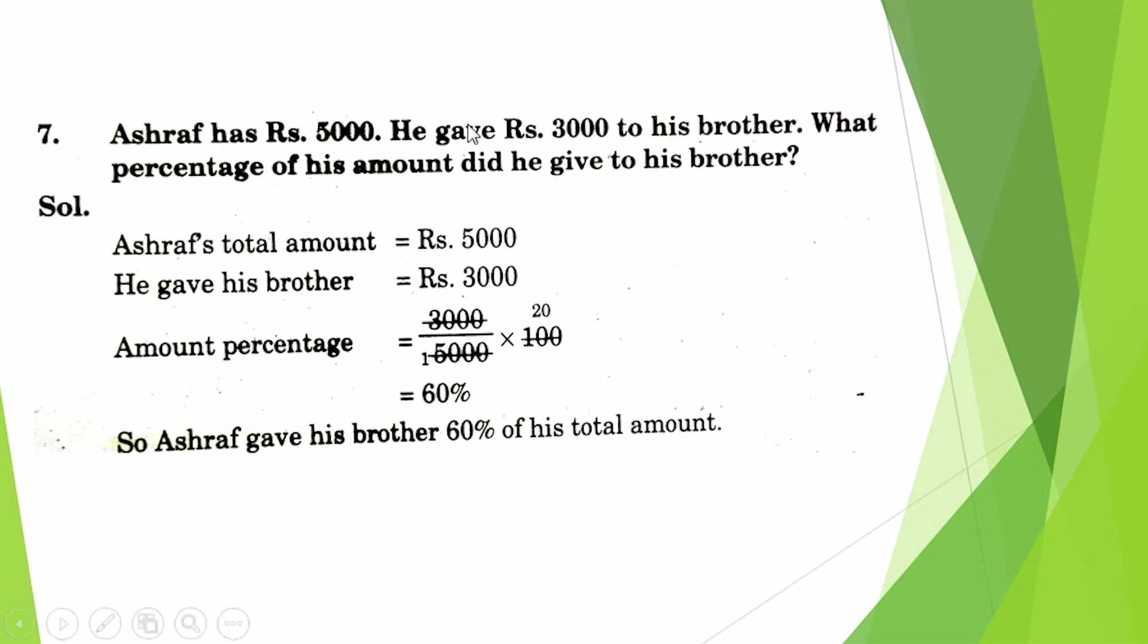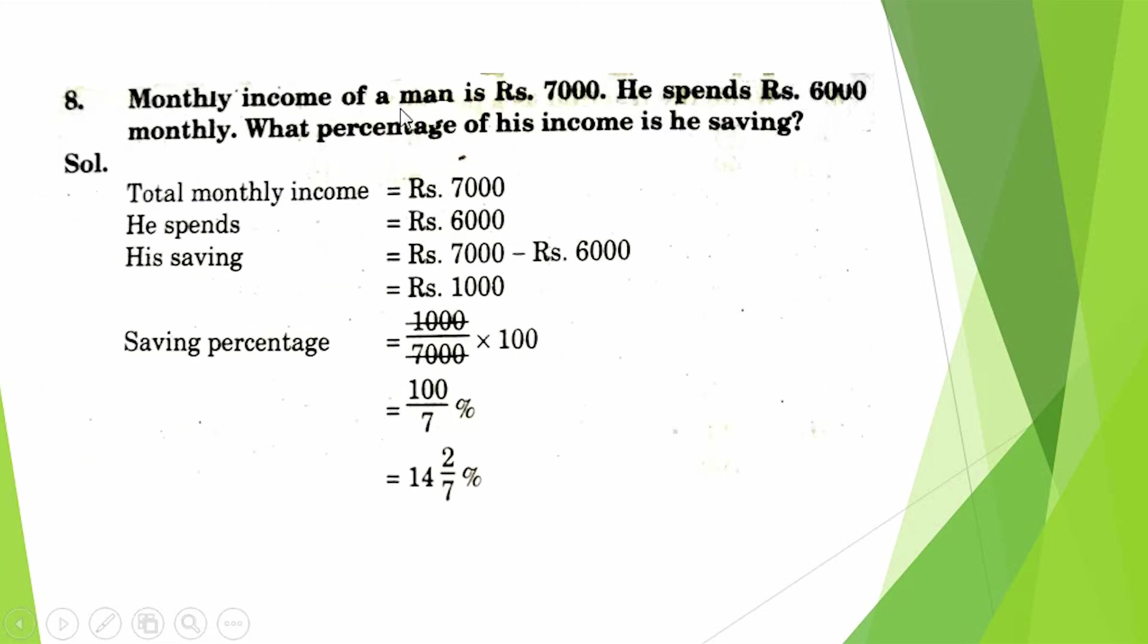Question number 7: Ashraf has Rs. 5000. He gave Rs. 3000 to his brother. What percentage of his amount did he give his brother? Ashraf's total amount is 5000. He gives his brother 3000. Amount percentage: 3000 ÷ 5000 × 100. The answer comes 60%. So Ashraf gave his brother 60% of his total amount.